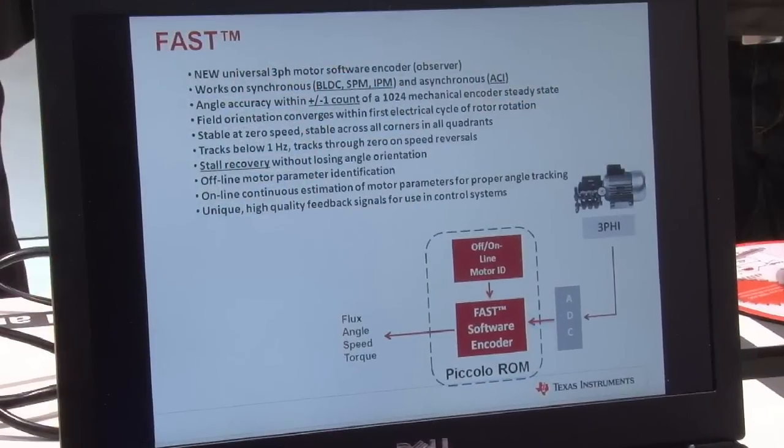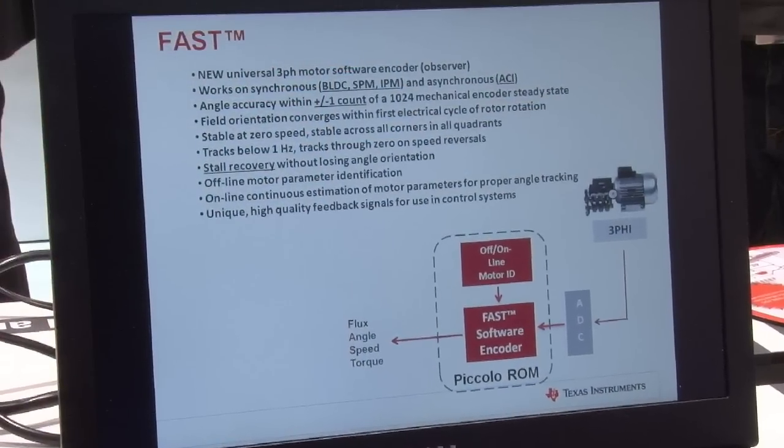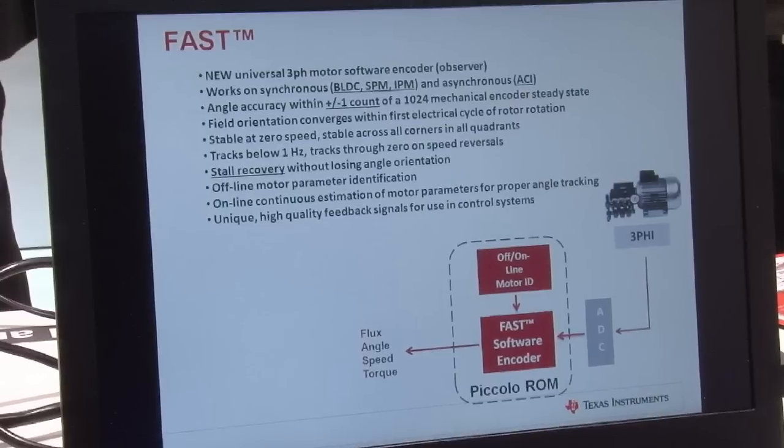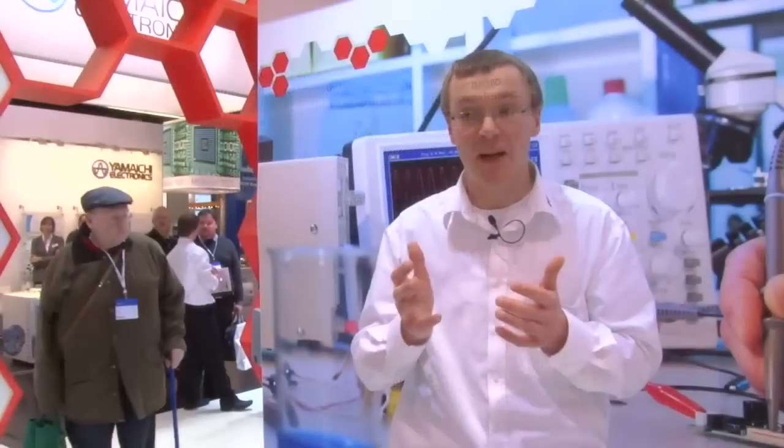The FAST algorithm as such, you'll see that the angle accuracy is impressive. It's similar to a 1024 mechanical encoder steady state machine. Also, you see again stall recovery. It's stable through zero. But it also works in all motor quadrants. So what you can do is that you can both use the motor in motor mode but also in generator mode.